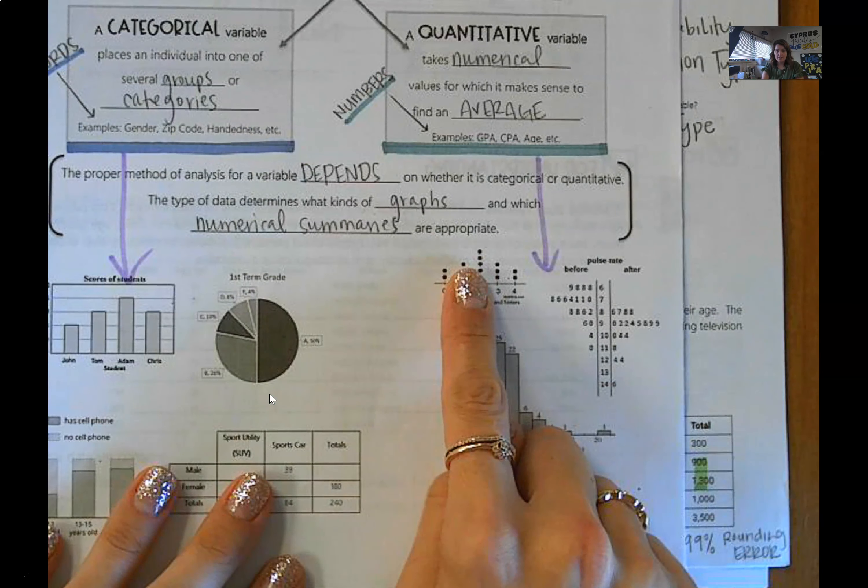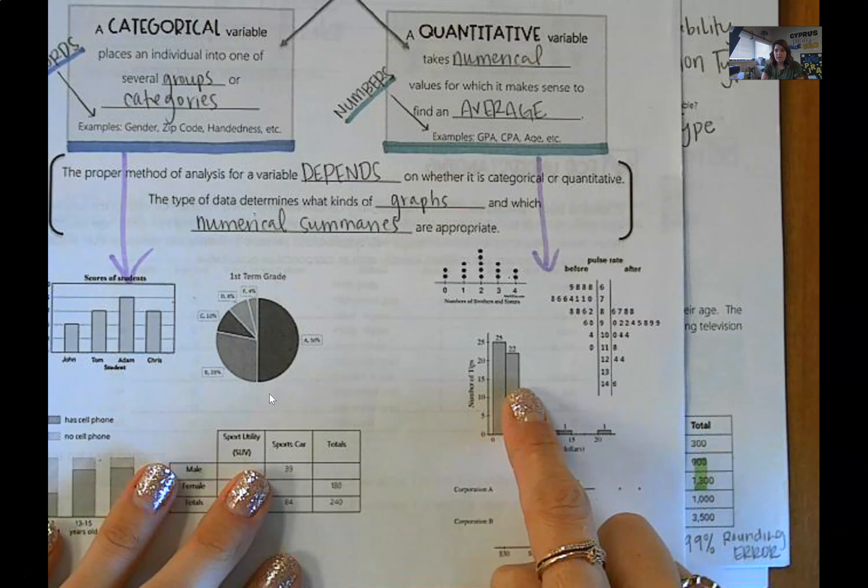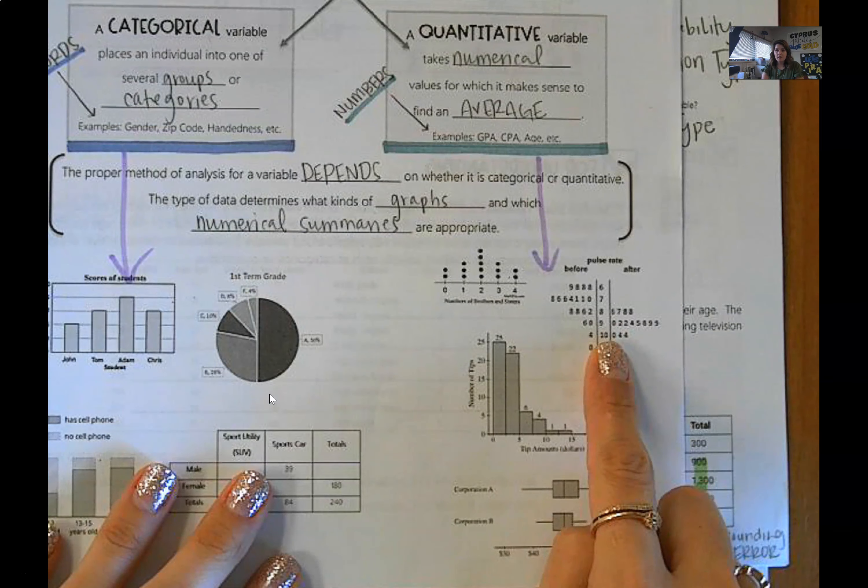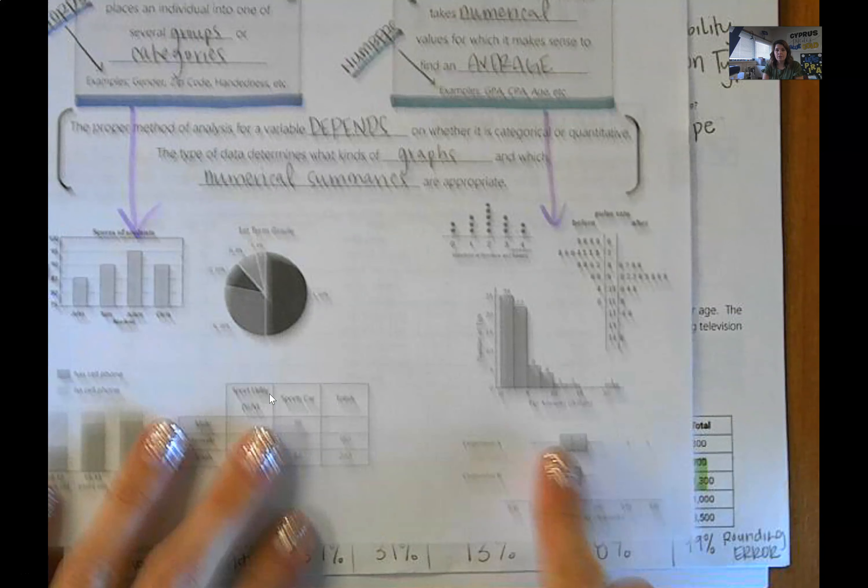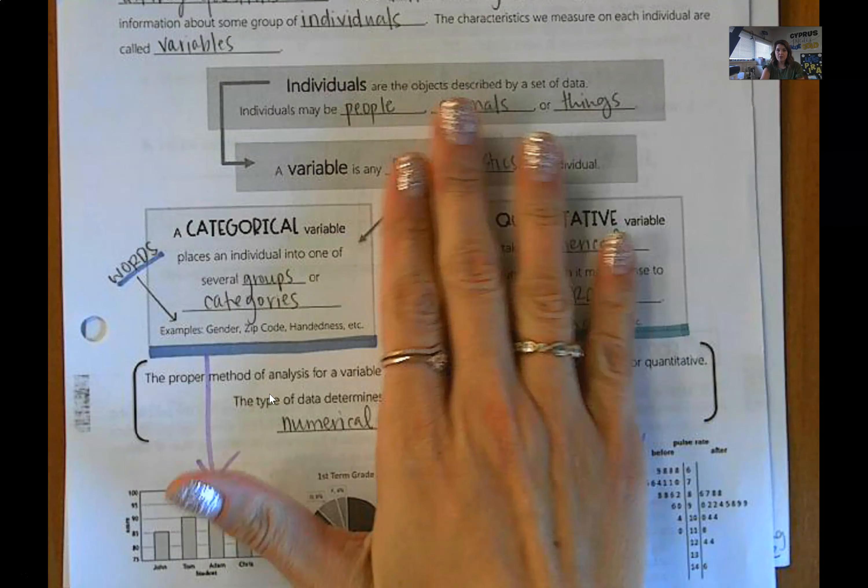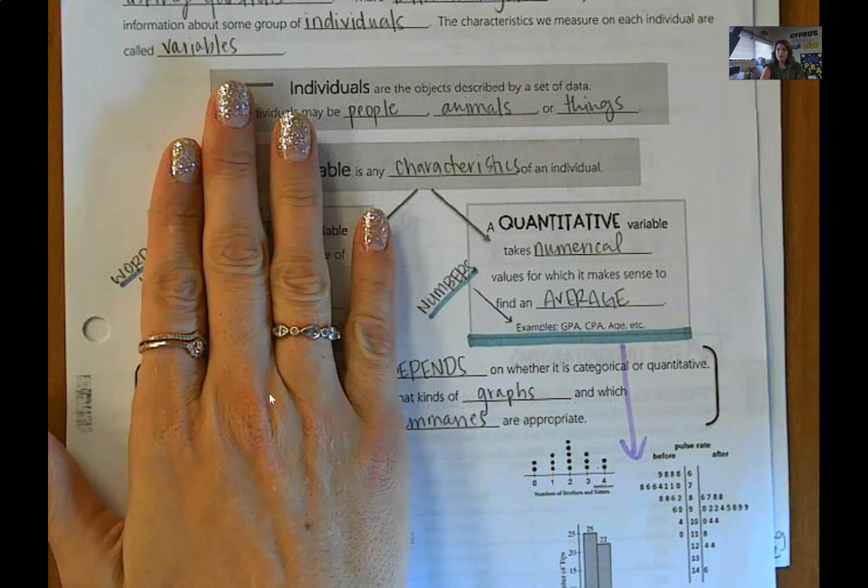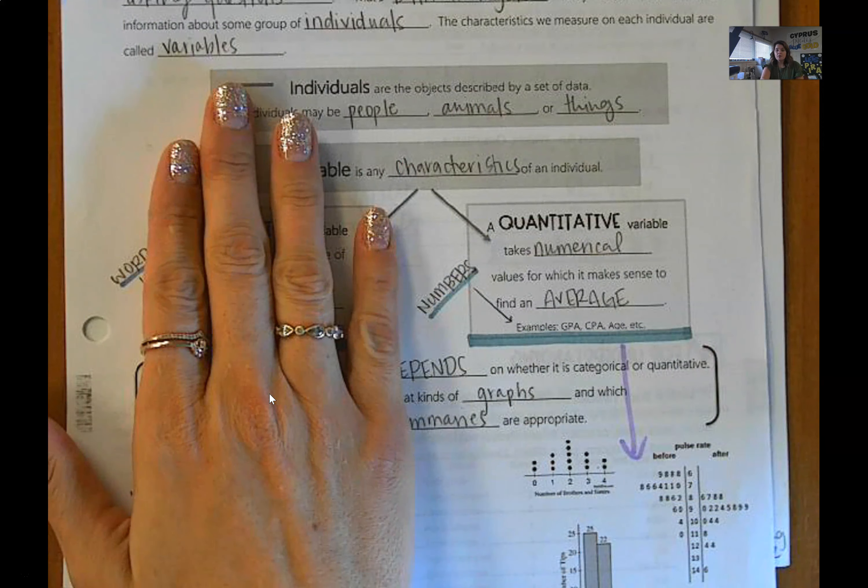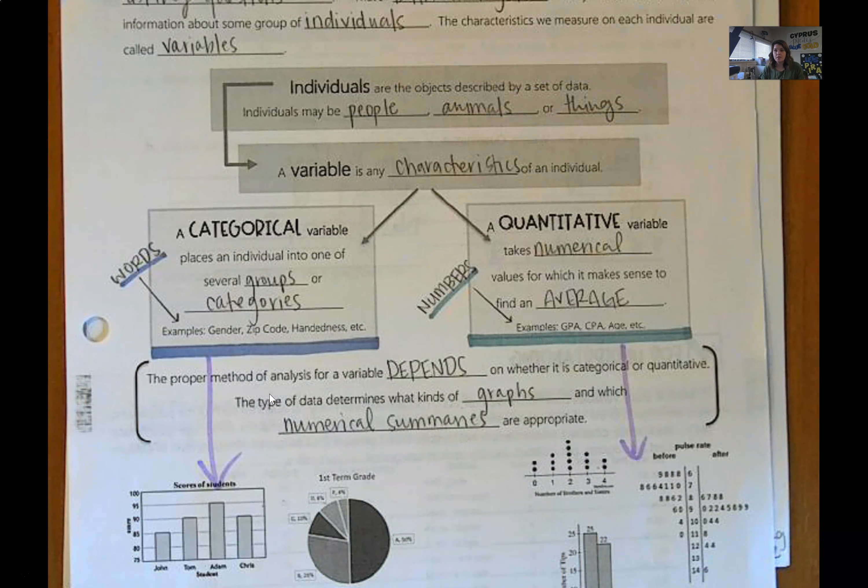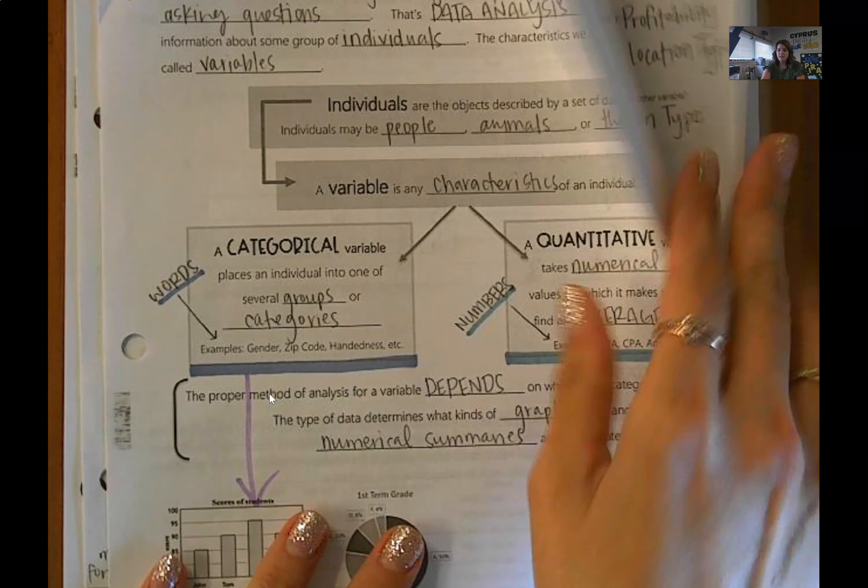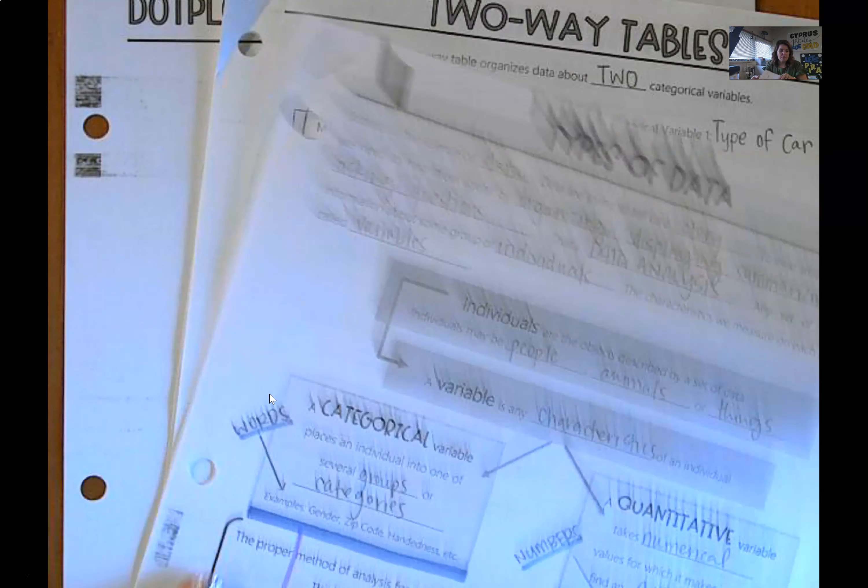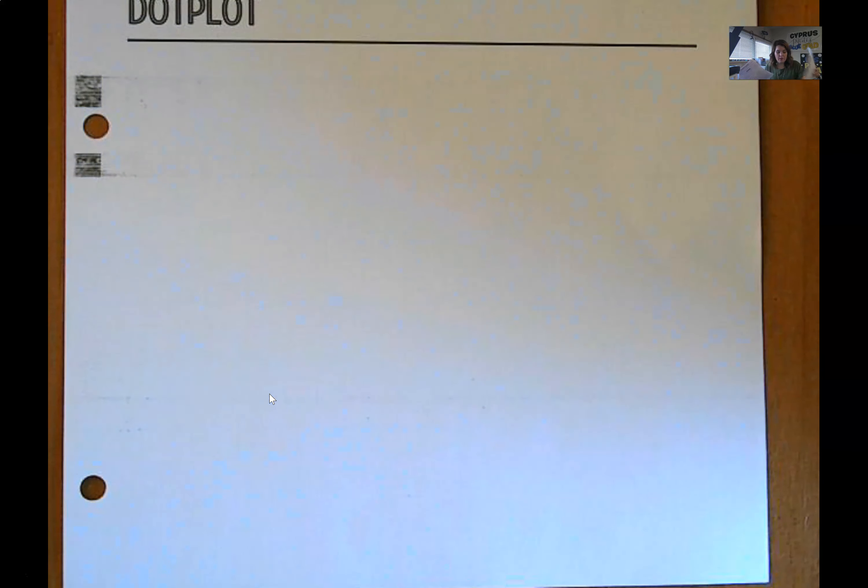So we are going to be discussing dot plots in this video, and then histograms, and finally stem and leaf plots. It'll be a little while before we get to these box and whiskers. We just finished categorical. We are now transitioning to quantitative. Once we are done with quantitative, we are done with unit one, and you will take your first exam. So that all being said, we're going to start with dot plots, and we've already made and looked at several dot plots.